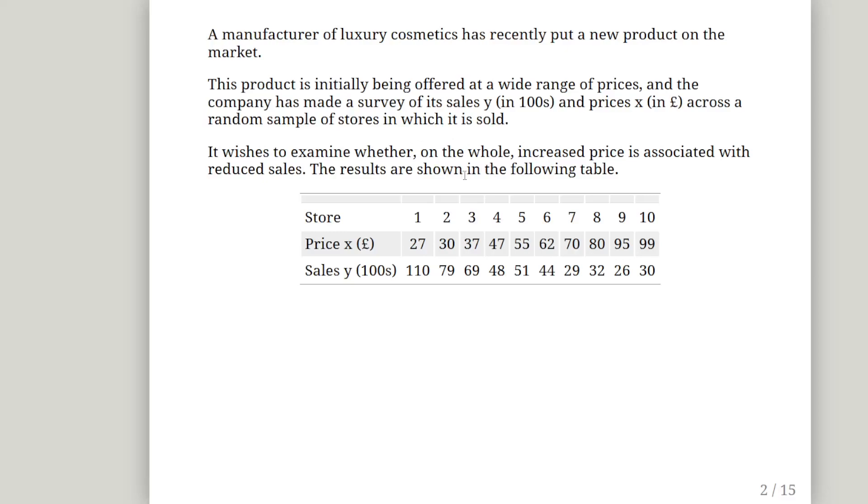And the results are shown in the following table. So we have 10 stores there, 1 to 10. We have the prices there, X, and I am just going to call that price, but it is the X variable from now on. 27, 30, 37, 47, 55, all the way up to 99. So that is a big difference. And sales, so 110 were in store 1. So that is 11,000 essentially, down to 3,000 in store 10, where it is sold for 99.